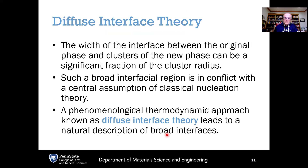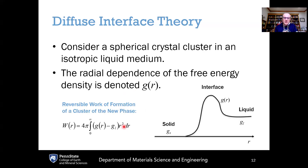Diffuse interface theory is like the next logical step after classical nucleation theory, where we relax the assumption of having a completely sharp interface. With diffuse interface theory, we can account for having some width of the interface between the nucleating cluster phase and the matrix phase, which is simply not handled within classical nucleation theory. The name should be obvious: it's called diffuse interface theory because it can account for a diffuse rather than a sharp interface.